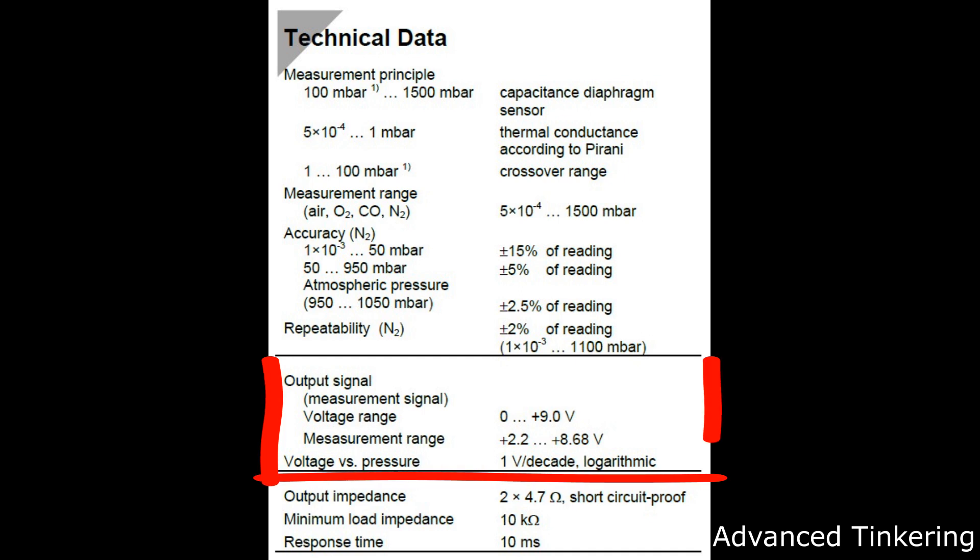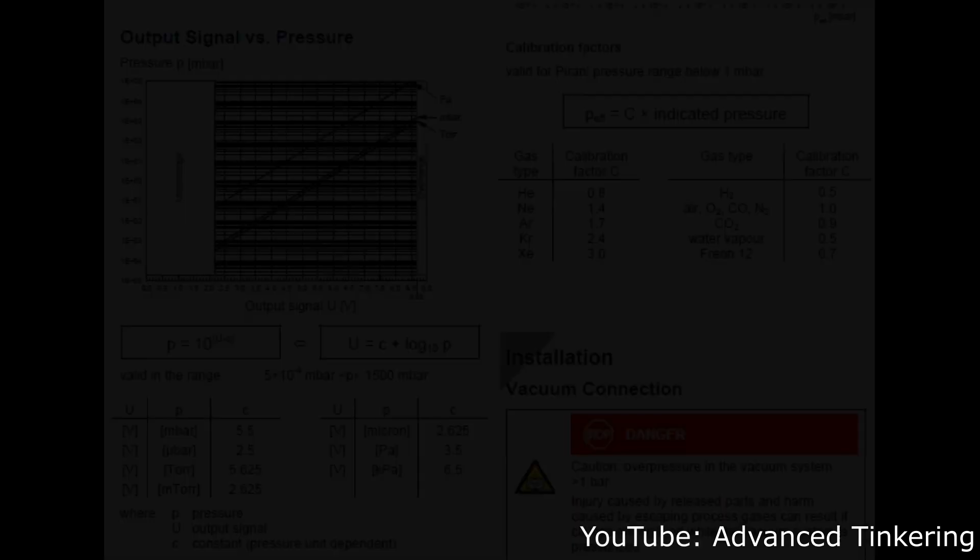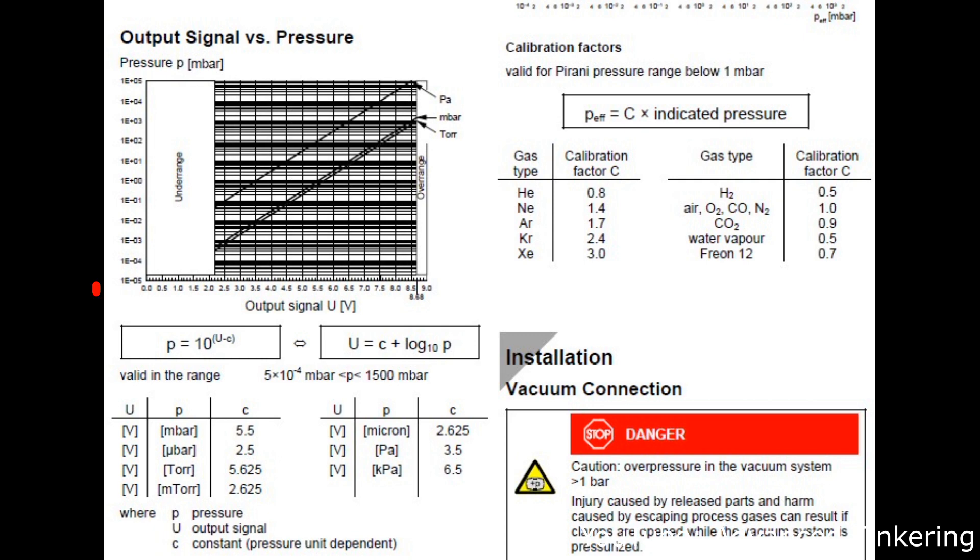The readout of the sensor is pretty simple. It gives out a voltage of around 2.2 to 8.68 volts depending on the pressure. By using a simple equation you can use the voltage of the sensor to calculate your pressure. The pressure equals 10 to the power of U minus C. U is the voltage of the sensor and C is a constant.